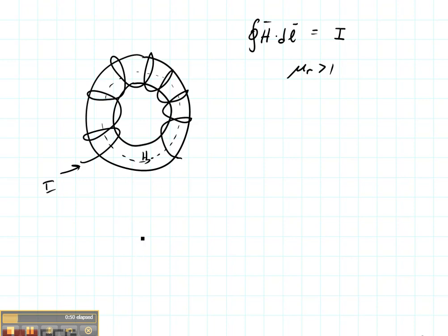Well, our Gaussian contour is still exactly the same as the one we just did. So we know that our left-hand side integral is going to give us 2 pi r H phi.